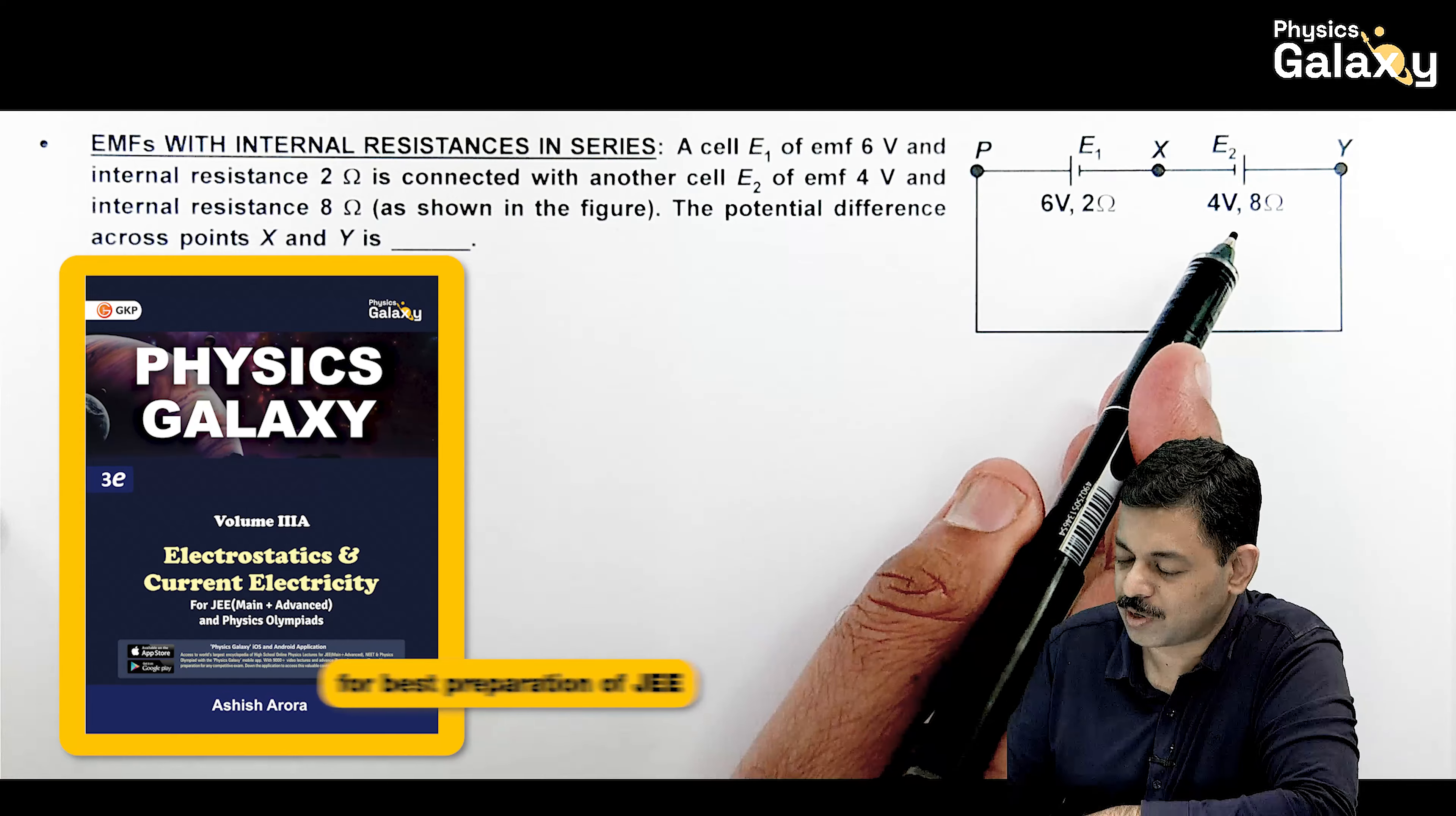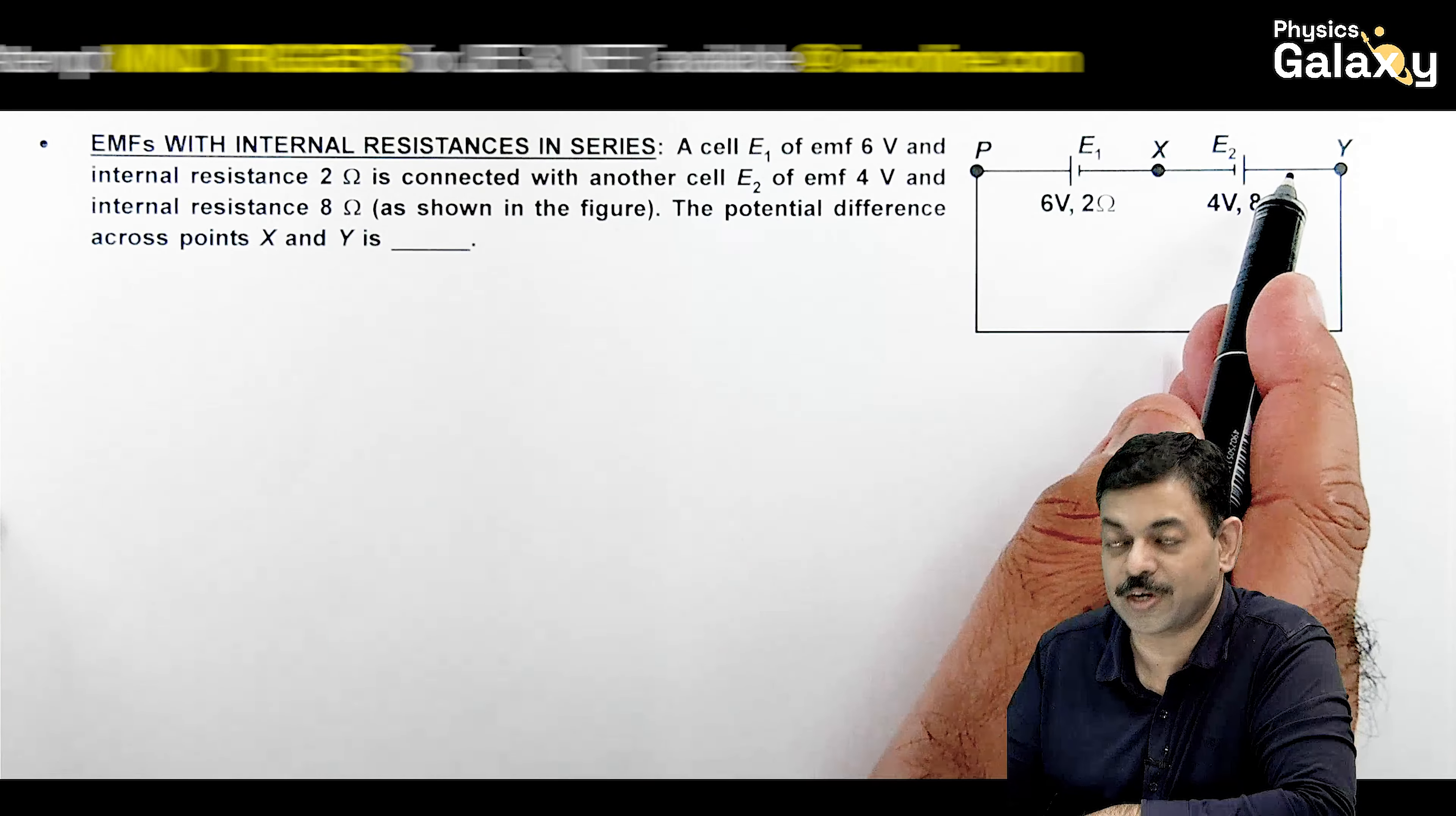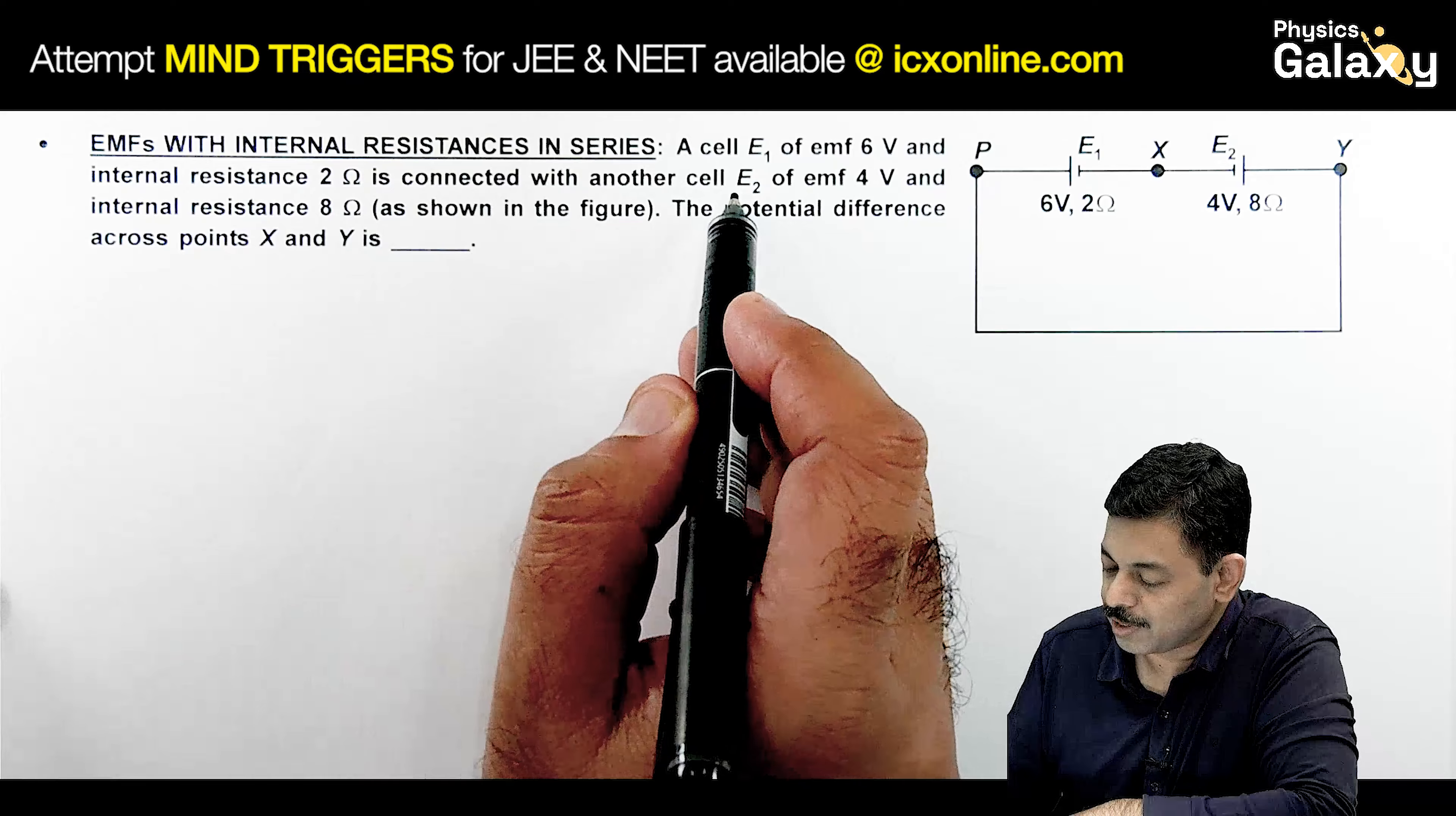Here we will be talking about EMFs with internal resistances in series. In the circuit we can see there are 2 EMFs with some internal resistances. They are connected in series in opposing mode. Plus, minus, minus, plus given is in opposing mode.